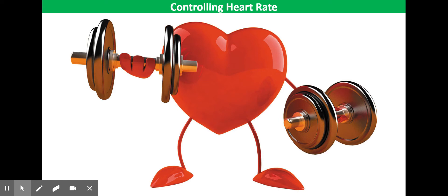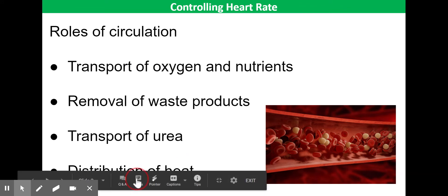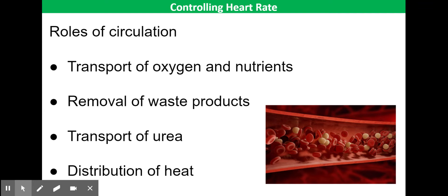So the heart, as I'm sure you all know, pumps blood around the circulatory system. This circulation has several really important roles. The first being transport of oxygen and nutrients—nutrients such as glucose, fatty acids, and amino acids to the tissues. Secondly, the removal of waste products, like carbon dioxide from tissues to prevent that accumulating, which would otherwise be toxic. Third, the transport of urea from the liver to the kidneys. And finally, to distribute heat away from the body or deliver it to the skin to radiate away.